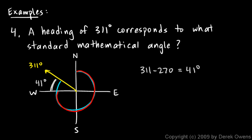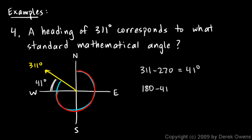Now I want the standard mathematical angle. Starting on the x-axis and rotating counter-clockwise to that direction would be 180 degrees if I went all the way across — but I'm not doing the last 41 degrees. So the answer is 180 minus 41, which is 139 degrees. This direction is a navigational heading of 311 degrees and a standard mathematical angle of 139 degrees.